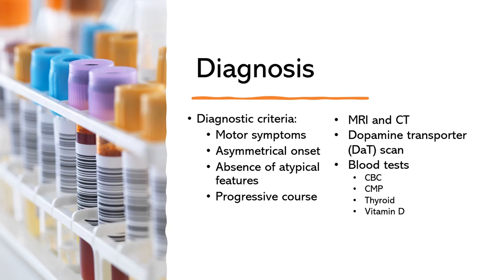DAT scans are not typically used for routine diagnosis of Parkinson's disease, but they may be helpful in certain cases where the diagnosis is uncertain. The DAT scan can help differentiate between Parkinson's disease and other conditions that might mimic its symptoms, such as essential tremor, drug-induced Parkinsonism, and other forms of Parkinsonism. But remember, it is not a definitive test for Parkinson's disease.